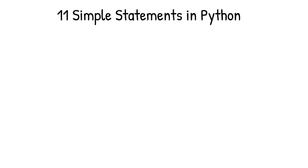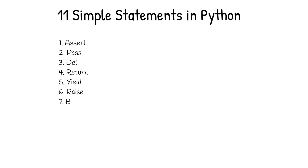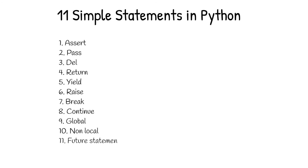There are 11 other simple statements in Python: assert, pass, del, return, yield, raise, break, continue, global, non-local, and future statement. All these statements are separate topics themselves, so I will create separate videos to explain each of them in the future. For now, just remember that these statements belong to the simple statement category in Python.